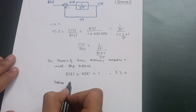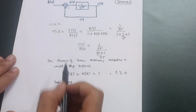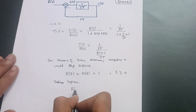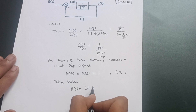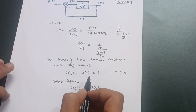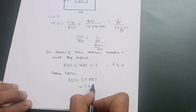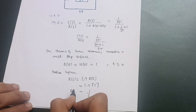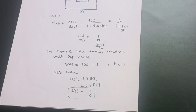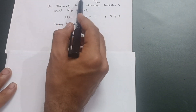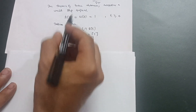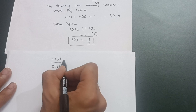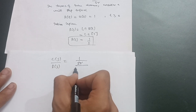As mentioned in previous videos, these are all Laplace domain functions. So R(S) = 1/S. Therefore, from C(S)/R(S) = 1/(S·τ + 1), substituting R(S) = 1/S, we get C(S) = R(S) × 1/(S·τ + 1) = (1/S) × 1/(1 + S·τ).